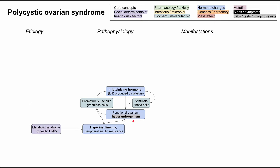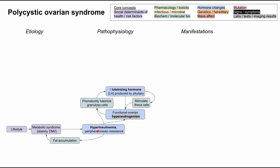A couple words on the etiology — on what causes these hormone changes and this hormone imbalance. Hyperinsulinemia is related to type 2 diabetes and metabolic syndrome in general. So obesity, type 2 diabetes, and hyperlipidemia all predispose you to having hyperinsulinemia. The cause of metabolic syndrome is partially genetic but also partially lifestyle — lack of exercise, sedentary lifestyle, eating poorly, consuming more calories than you burn. There's a bit of a vicious cycle here because insulin itself is an anabolic hormone and results in fat accumulation, which worsens the obesity and metabolic syndrome.